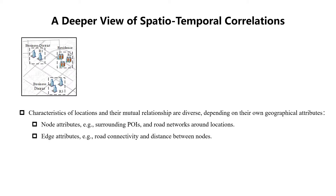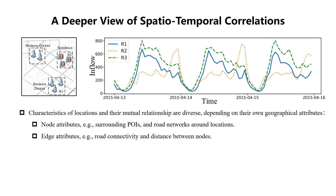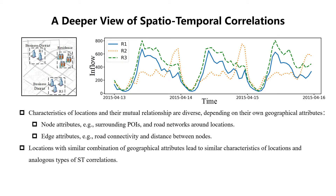As a result, different districts have very different inflow trends, indicating different types of spatio-temporal correlations. Second, locations with a similar combination of geographic attributes lead to similar characteristics of locations and analogous types of ST correlations. For example, District R1 and R3 contain numerous office buildings indicating business districts, while R2 contains many apartments, denoting a residential district.